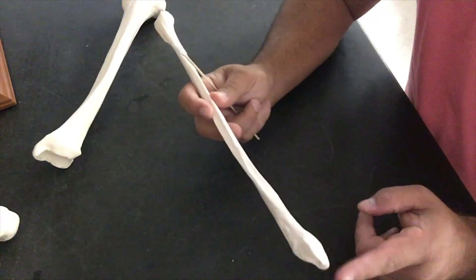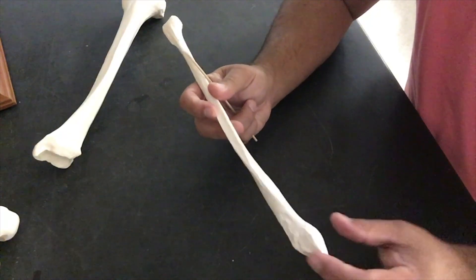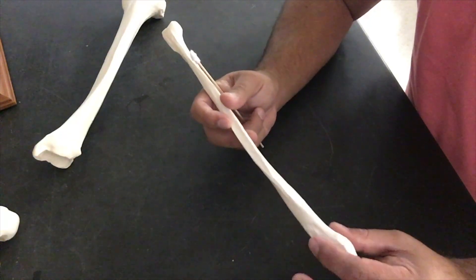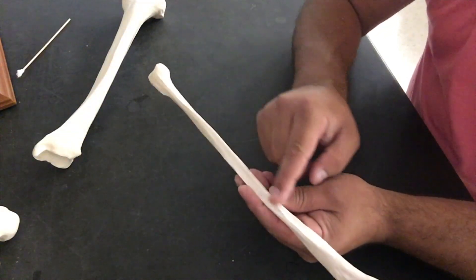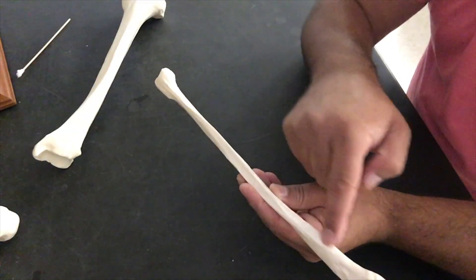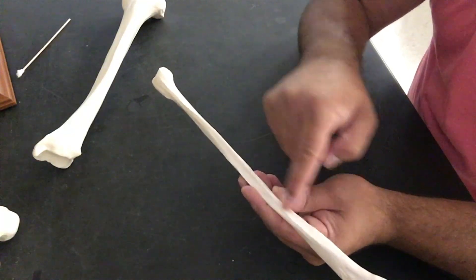So now if you feel on the outside aspect of your ankle, that bump, that protrusion that you feel is the lateral malleolus. Now, determining left to right is a little more difficult. I like to feel for this sharp edge. That sharp edge will always point anterior.